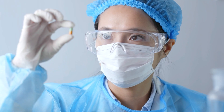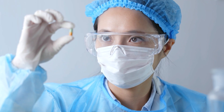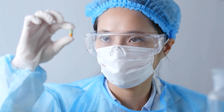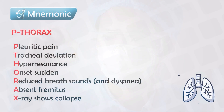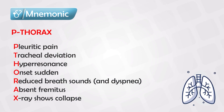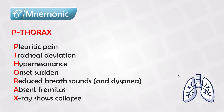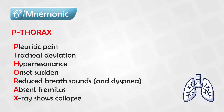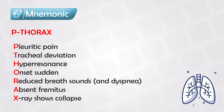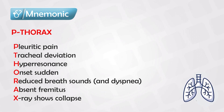While pneumothorax is common, tension pneumothorax is rarer but more serious. The main differentiating feature is that tension pneumothorax has instability of the vital signs. There are other signs and symptoms the patient will have, and they are very important to know. The sooner you diagnose the patient, the sooner you start the treatment and the better the outcome.